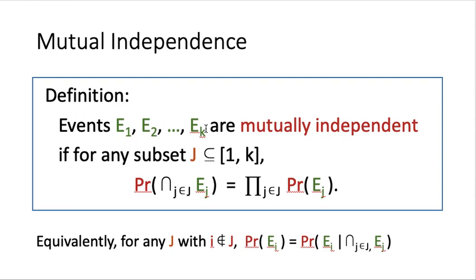If k equals 2, this includes the case that the probability of E1 intersect E2 equals the probability of E1 multiplied by the probability of E2. So mutual independence automatically implies that for any pair of events — E1 and E2, E1 and E3, E2 and E3, and so on — any pair of events are independent. But it is more than that: it holds for any subset of the events. For any subset J from 1 to k, the intersection probability equals the individual probabilities multiplied together.